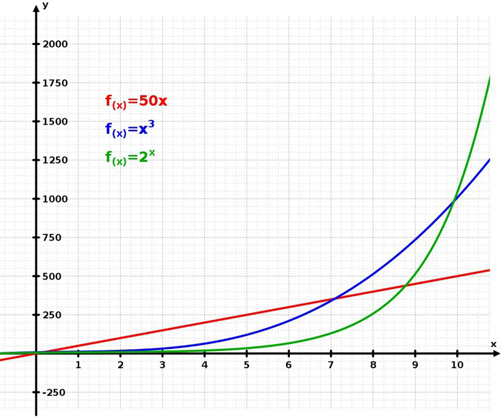Exponential growth is exhibited when the rate of change—the change per instant or unit of time—of the value of a mathematical function of time is proportional to the function's current value, resulting in its value at any time being an exponential function of time, i.e., a function in which the time value is the exponent.